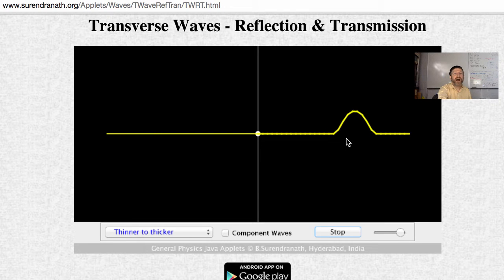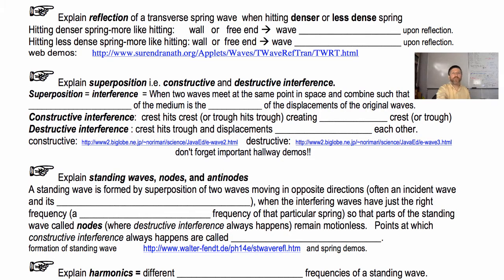Notice the wavelength is shorter here than it is over here because it's moving slower. So that is our thinner to thicker. When you are hitting a denser spring, is it more like hitting a wall or more like hitting a free end? More like hitting a wall. So the wave inverts upon reflection.